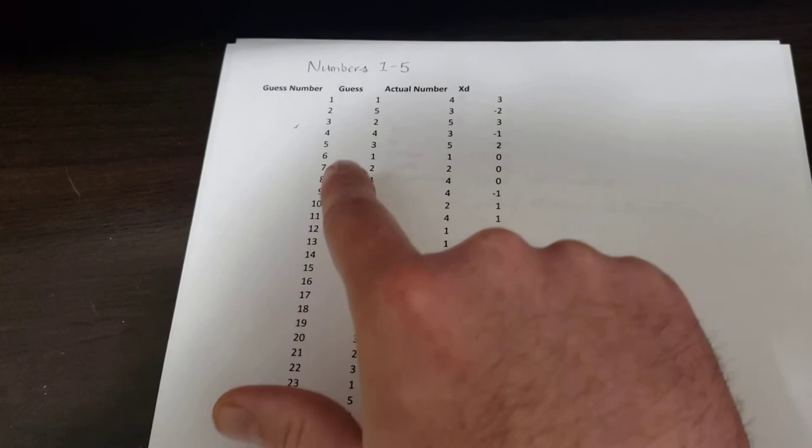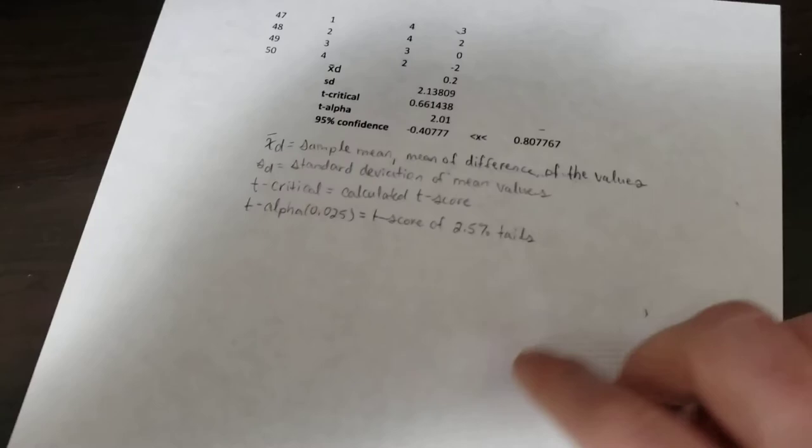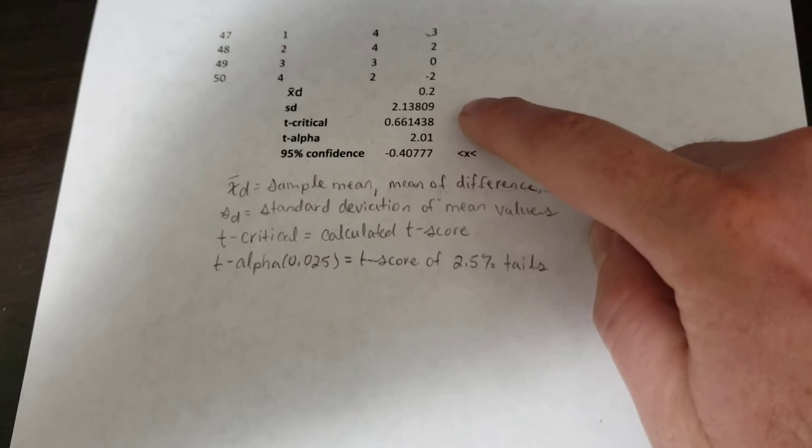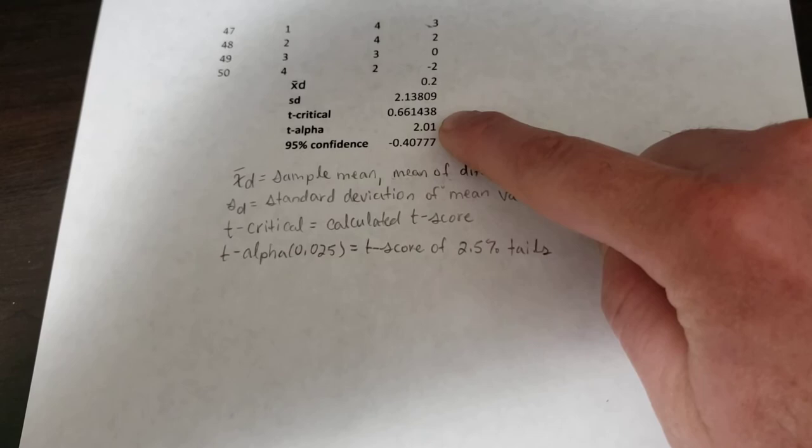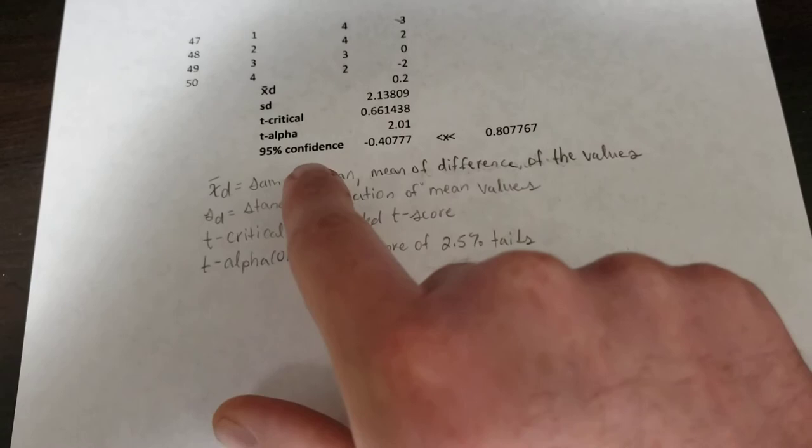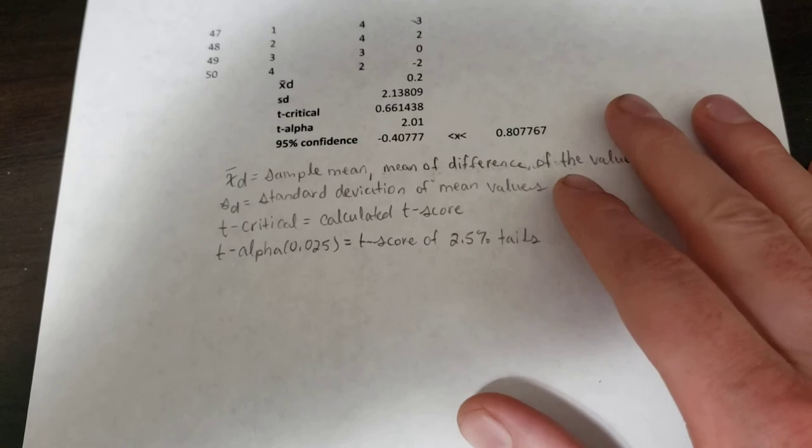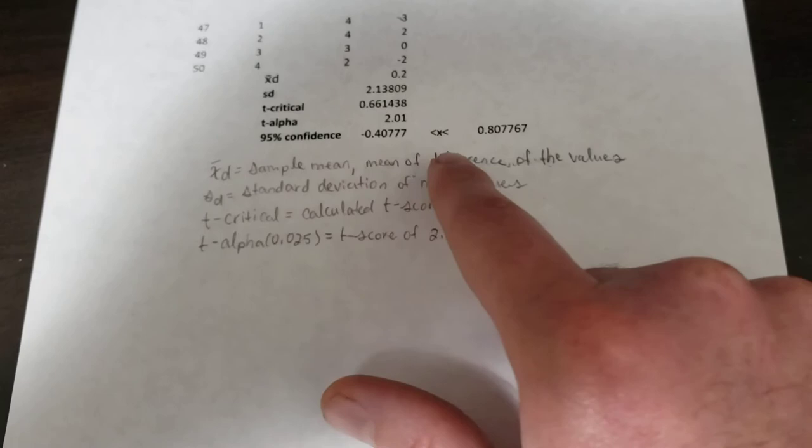And again, we've got our guess number, our guess, our actual number, and the difference of the two. From that we create our data values. We got our sample mean, our standard deviation, and with those we compute our t critical, which is 0.661. And now we've got t alpha, again this should be negative 2.01. So again, our t critical is out of that rejection band and we're unable to reject the null hypothesis. And if we look at the 95% confidence interval, we are 95% certain that our critical t will fall in between negative 0.4 and 0.8. And so we're 95% certain that we cannot reject the null hypothesis.